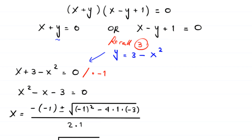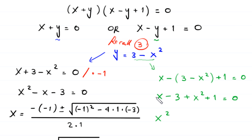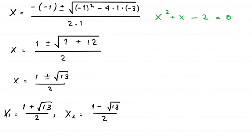Now for the second case, x minus y plus 1 equals 0. Substituting y with 3 minus x squared gives x minus (3 minus x squared) plus 1 equals 0. Simplifying: x minus 3 plus x squared plus 1 equals 0, which rearranges to x squared plus x minus 2 equals 0.